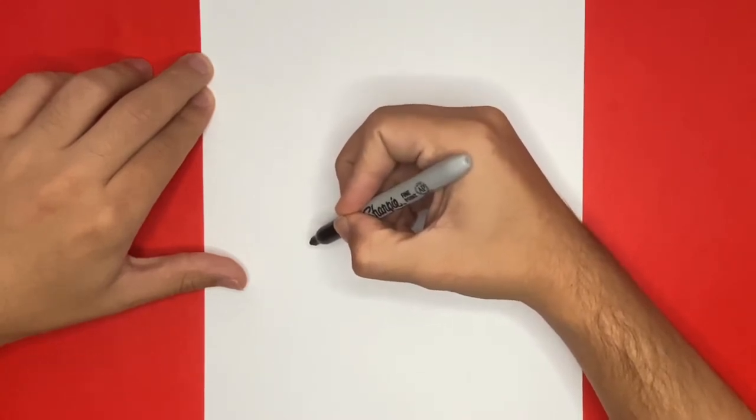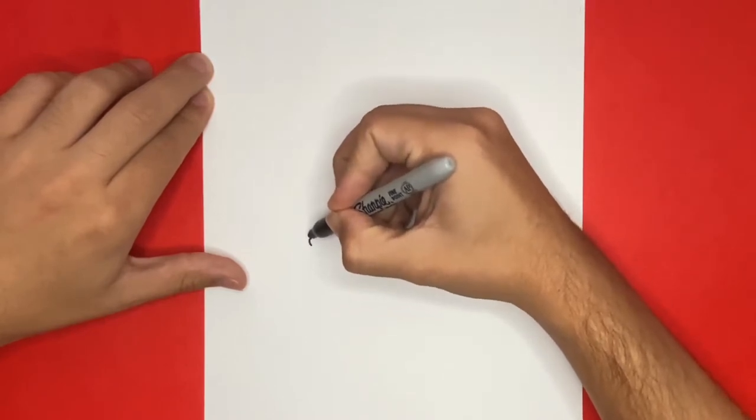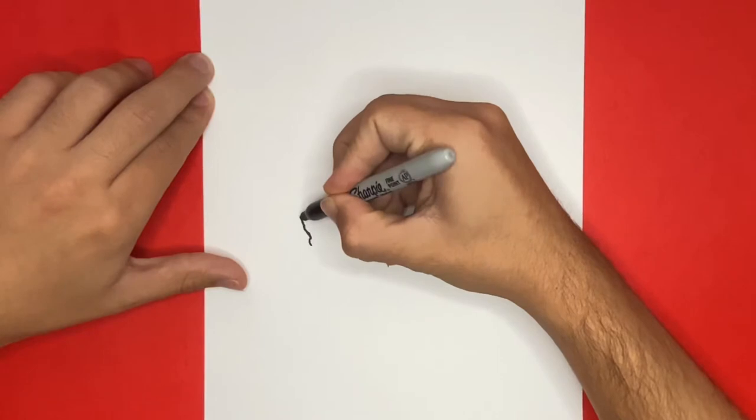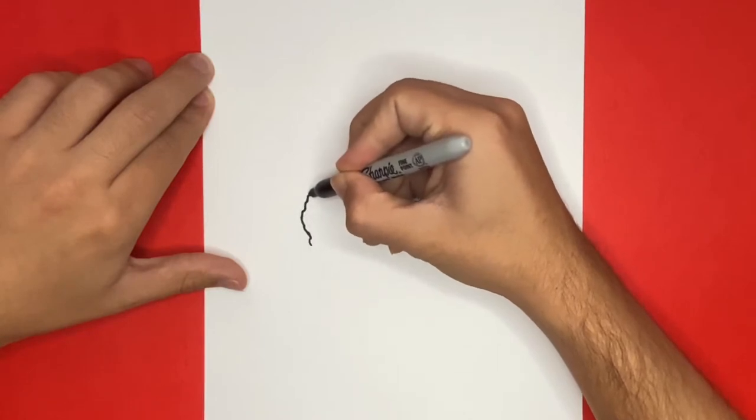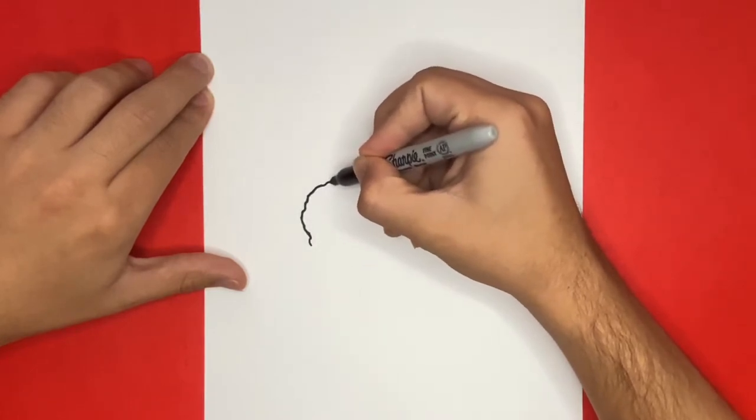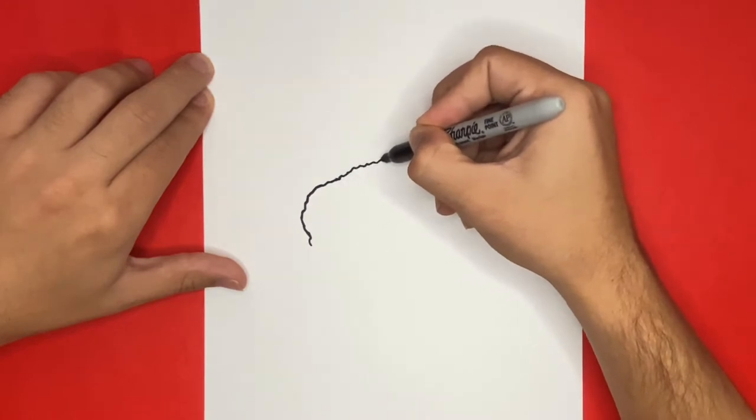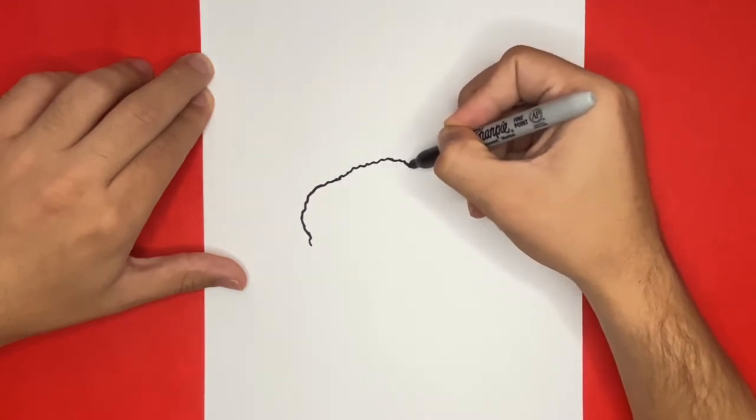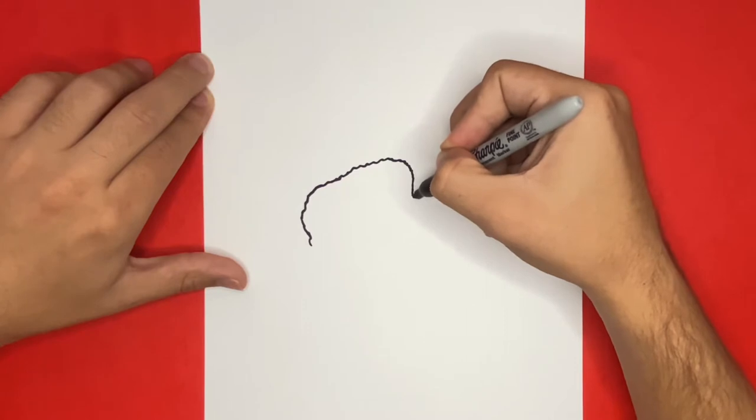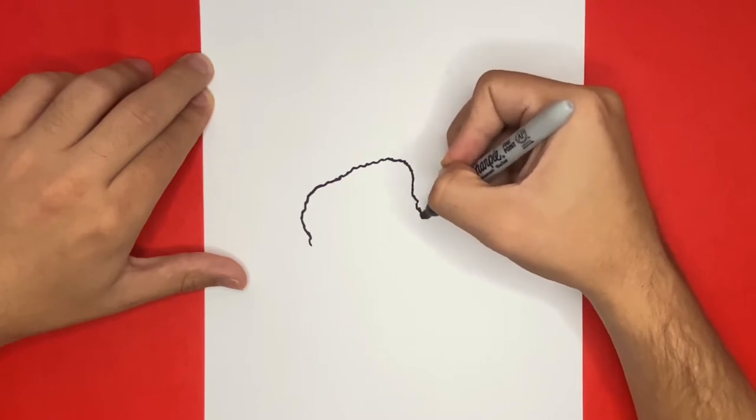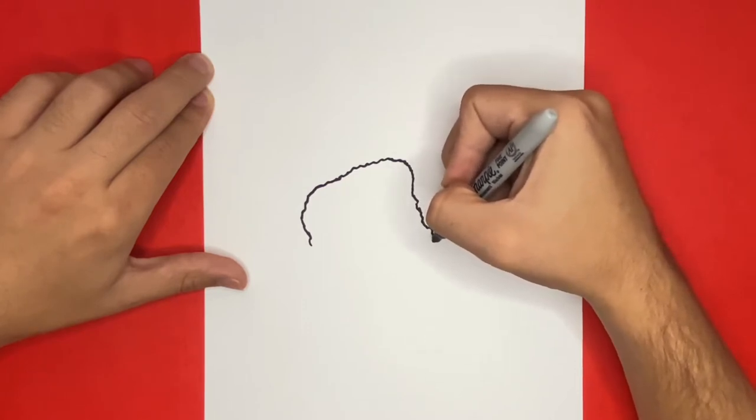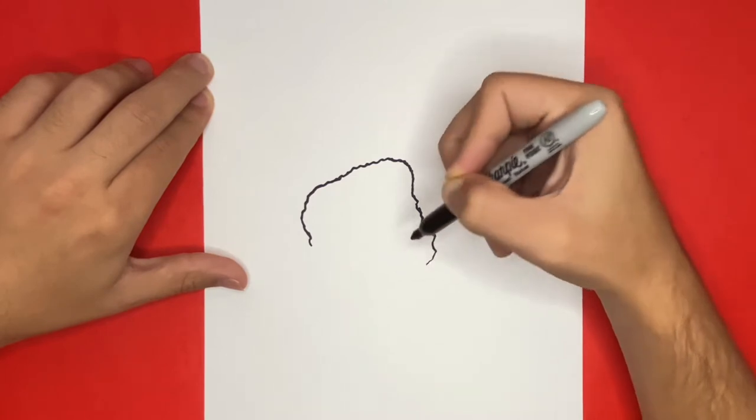We're going to begin by making what is called the metacarpal pad or the biggest part of the paw. So we're going to go ahead and make this right now. But when we draw this we're going to make the edges almost as if they're very squiggled. They're not going to be straight. And we're just going to draw this all the way around and connect it to where we first started.